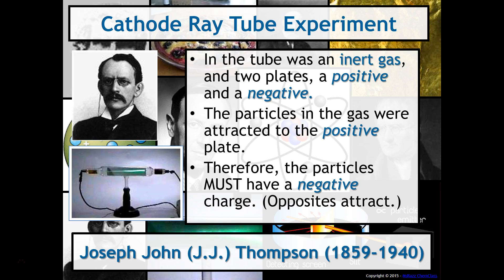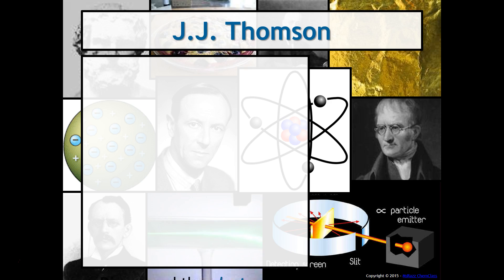Therefore, JJ Thompson was able to conclude that these particles must have a negative charge because we know that opposites attract, positive attracts negative. As you might expect, JJ Thompson discovered the electron.